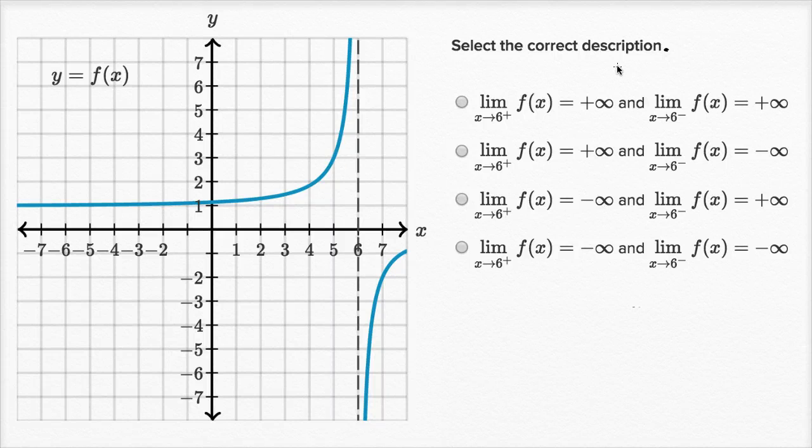We're asked to select the correct description. It looks like all the descriptions deal with what is the limit of f of x as we approach six from either the right-hand side or from the left-hand side. So let's think about that.